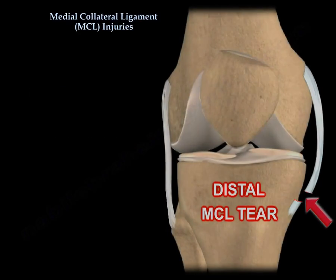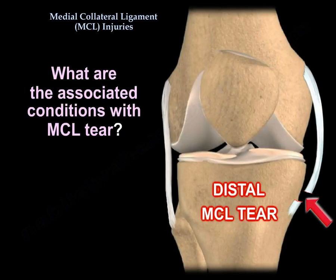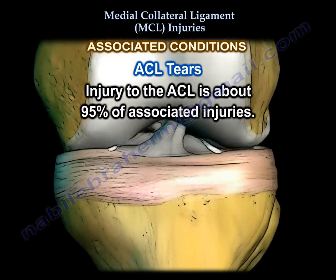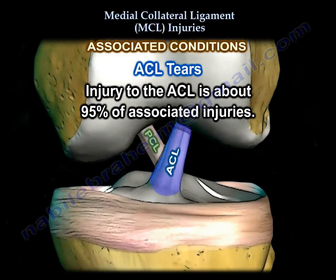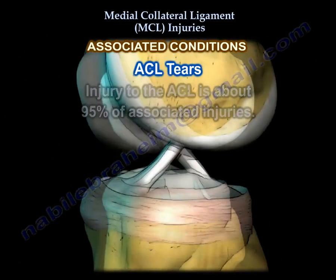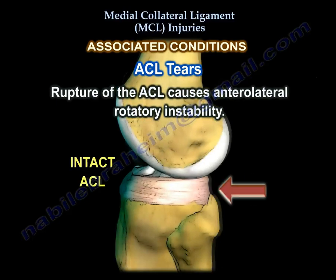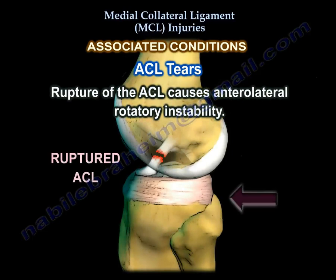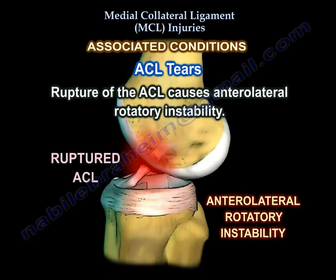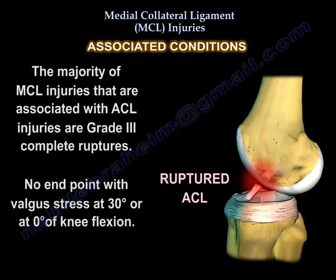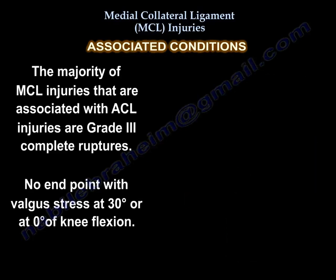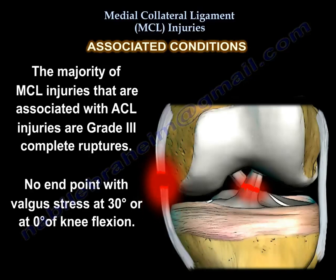What are the associated conditions with MCL tear? Injury to the ACL occurs in about 95% of associated injuries. Rupture of the ACL causes anterolateral rotatory instability. The majority of MCL injuries associated with ACL injuries are grade 3 or complete ruptures, with no end point on valgus stress at 30 degrees of knee flexion or at 0 degrees.